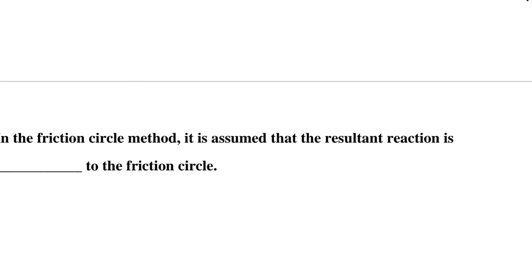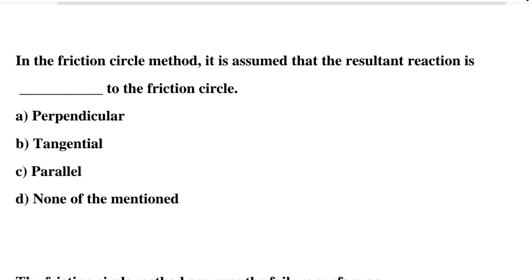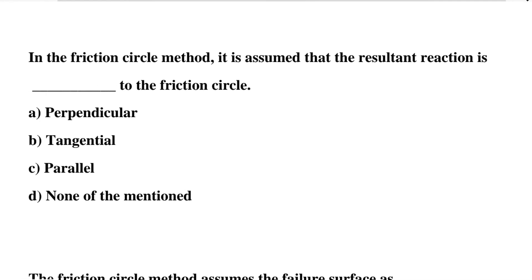Next question: in the friction circle method, it is assumed that the resultant reaction is dash to the friction circle — Option A: perpendicular, Option B: tangential, Option C: parallel, Option D: none of the mentioned. The correct answer is Option C, parallel.